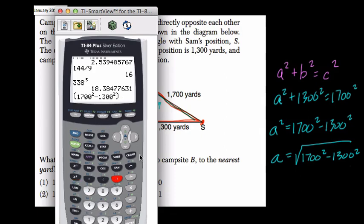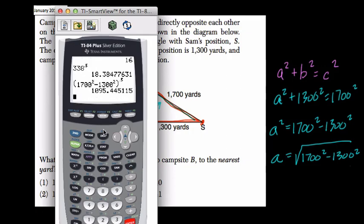Close my parentheses. That's all in a square root, so I can raise it to the half power. Same thing as the square root. Our answer is 1,095.445.